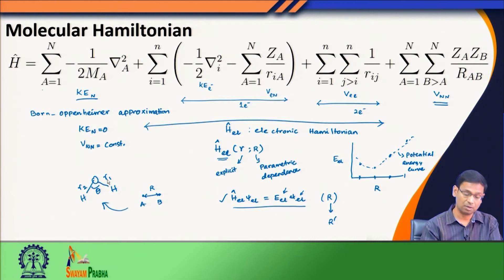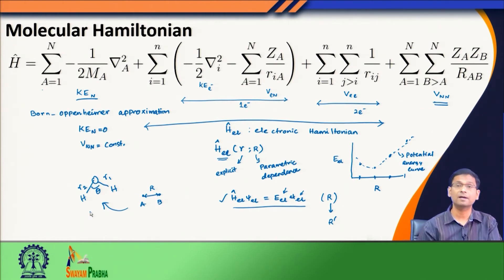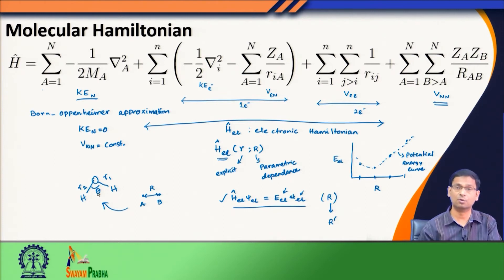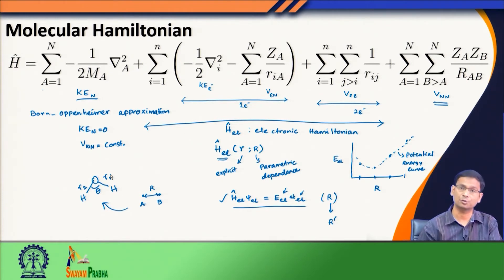The potential energy curve in this case will be one-dimensional because I have only one bond distance. But when I come to a water molecule, I can change R₁ while keeping R₂ and theta constant, or change R₂ while keeping R₁ and theta constant, or simultaneously change R₁, theta, and R₂. Therefore my potential energy surface in this case would become at least three-dimensional. The dimensionality is given by the number of nuclear degrees of freedom or vibrational degrees of freedom available to that molecule. For non-linear molecules this is 3N − 6, where N is the number of atoms.